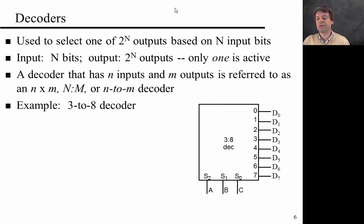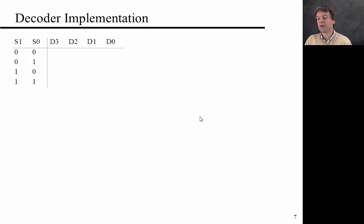The decoder is used to select one of 2 to the n outputs based on n input bits. So the input is size n, output is 2 to the n, and only one of these outputs is active at any given time. A decoder that has n inputs and m outputs is referred to as an n-to-m decoder. For example, as shown in this graph, a 3-to-8 decoder. There are three control inputs here at the bottom, and then eight outputs, D0 to D7.